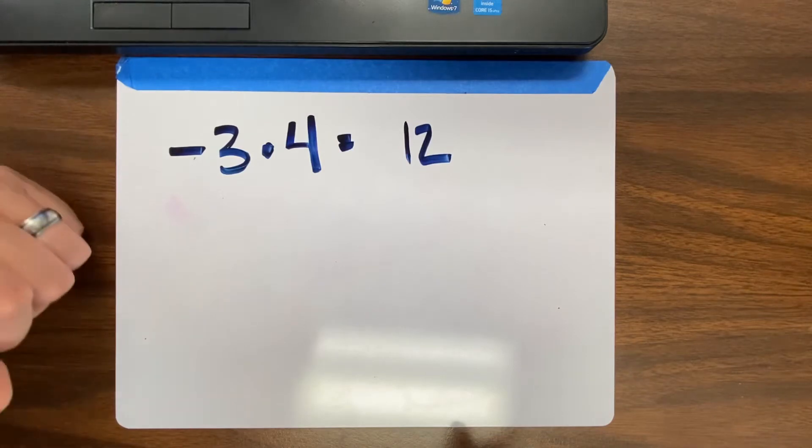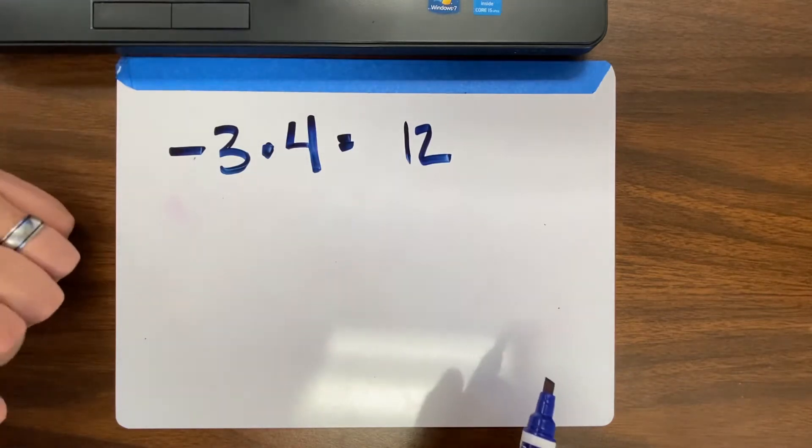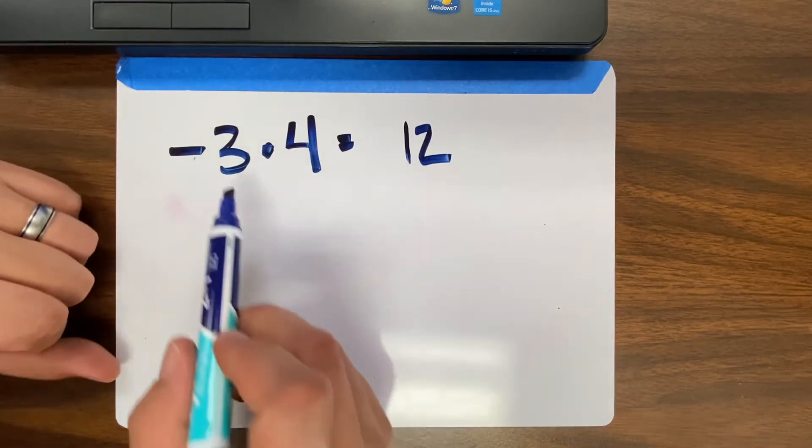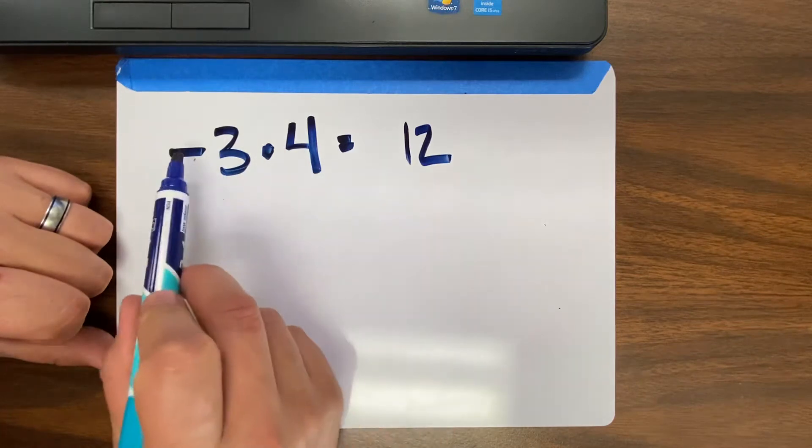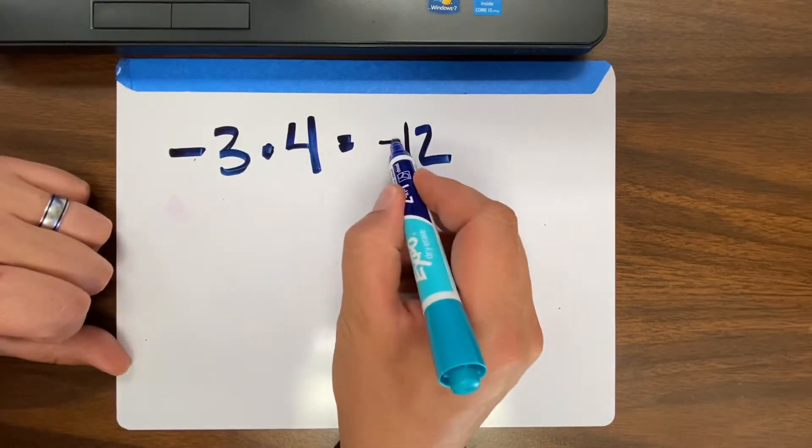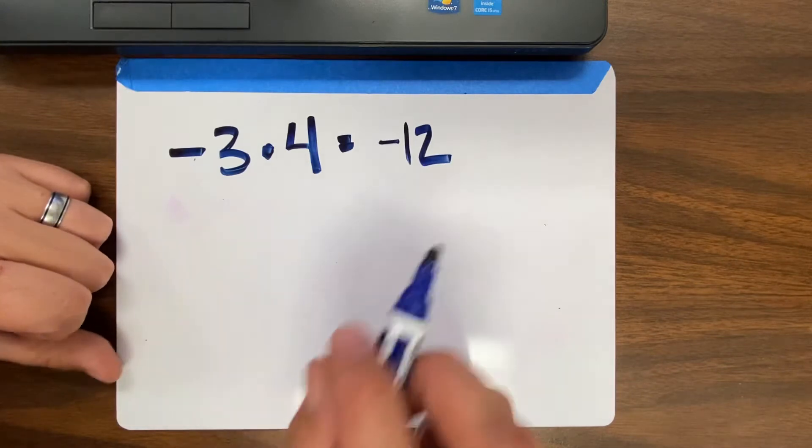That's the easy part. The other easy part is, is it positive or is it negative? When we have two numbers, if there's only one negative, the answer would be negative. If they're both negative, the answer would be positive.